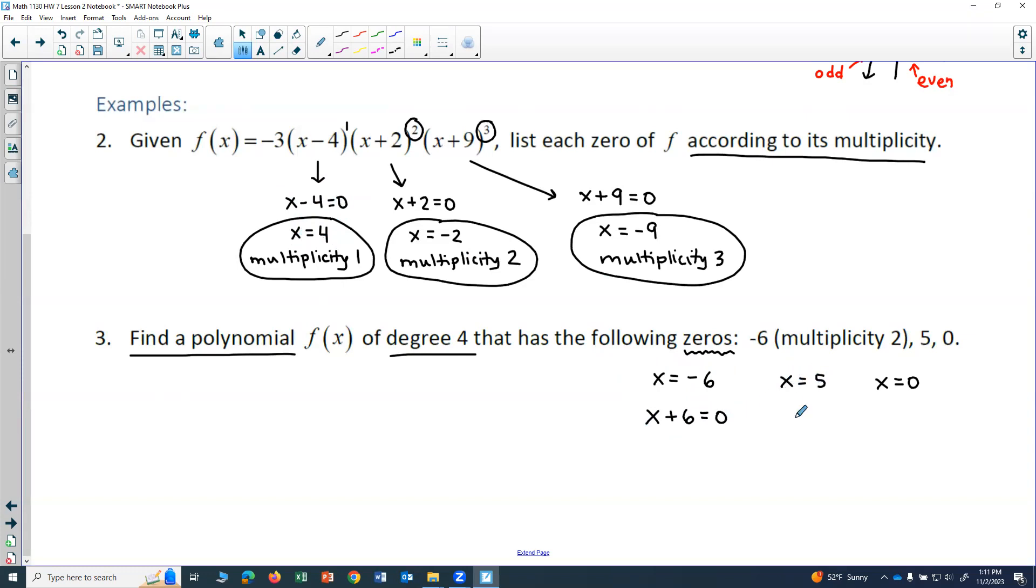And for x equals 5, the factor that is associated with that would be x minus 5 equals 0. So I'm working backwards here. And then here, I have x equals 0. So x would actually be its own factor.